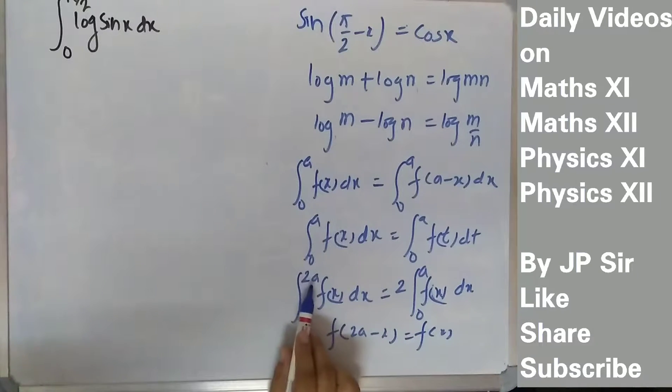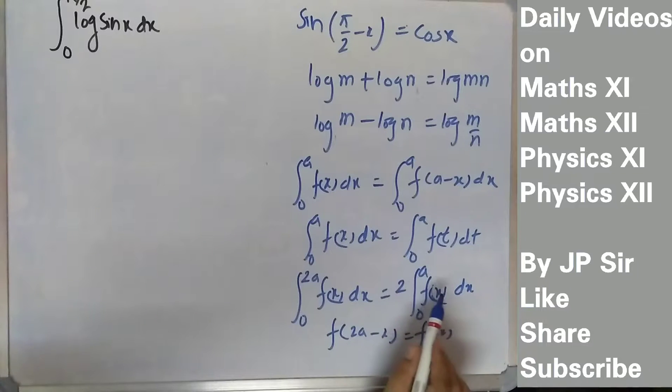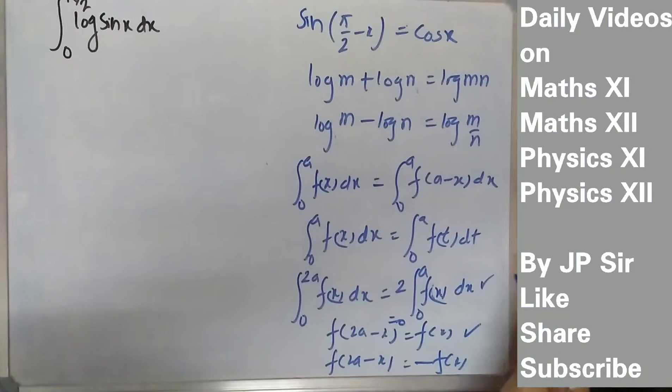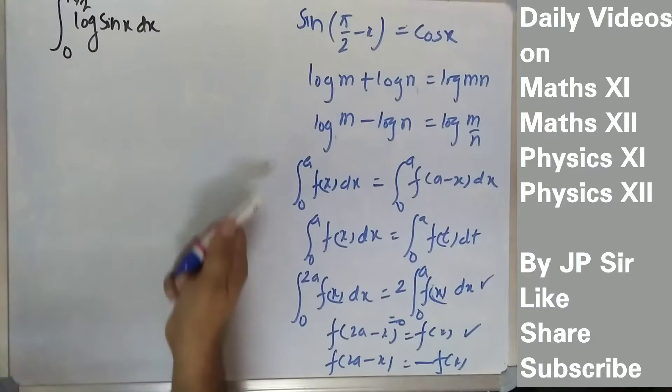If 2a minus x is minus f(x), you can write it as 0. But we will have this situation in this question, so we are going to use this. Please pause the video here and take down all these properties.